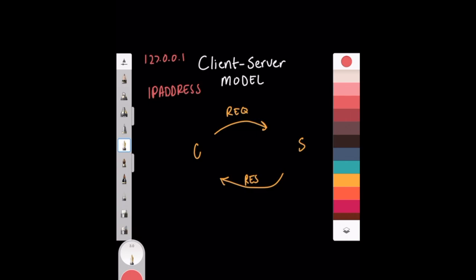The other thing the client needs to know is what port to communicate with the server on. Think of the IP address as basically where the server lives, and the port as the specific entry point for the service you want. A server might have multiple ports — up to 16,000 — and it listens on one of them for certain types of requests.